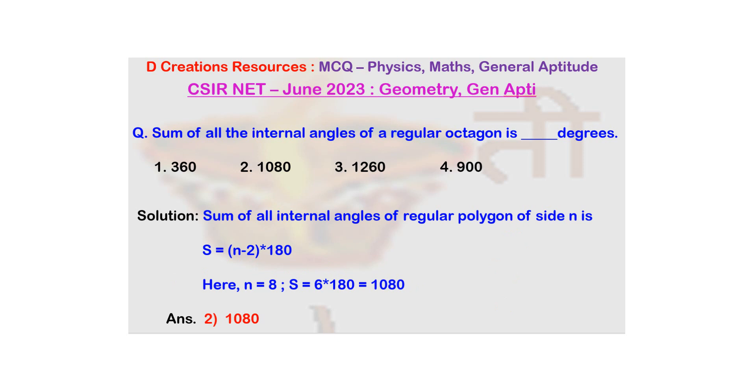So, what happens in case of an octagon? We need to substitute N is equal to 8. And so, the sum is going to be 8 minus 2 into 180. That is 6 into 180, which is 1080, which is option number 2.